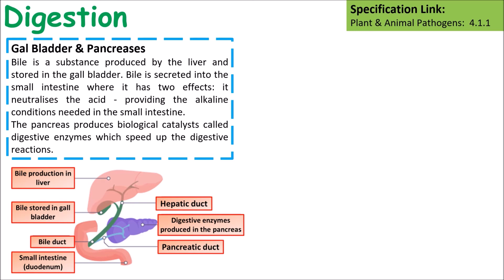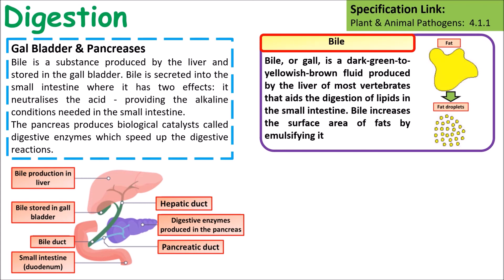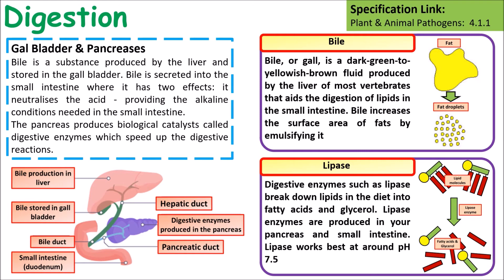After the stomach, food passes into the duodenum where connections from the gallbladder and pancreas are made. The gallbladder stores bile, which is produced in the liver. Bile has two main functions: it neutralises stomach acid and emulsifies large droplets of fat into smaller ones, increasing surface area. The pancreas produces the enzyme lipase, which breaks down large fats into fatty acids and glycerol. Lipase works best at around pH 7.5.